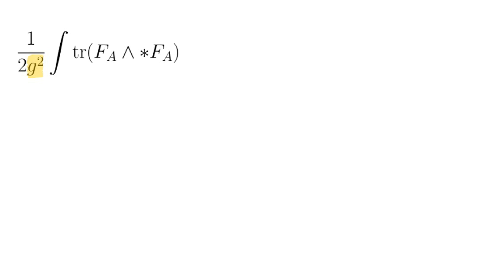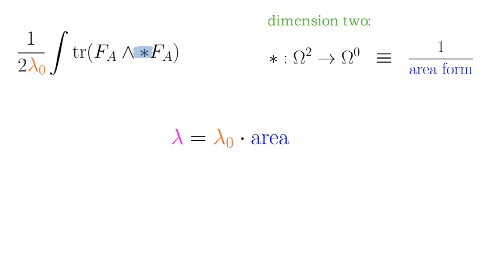Physicists will denote such a constant by e squared or g squared, but I'll just call it λ₀. In two-dimensional Yang-Mills, the action involves the Hodge star, mapping two forms to zero forms. This involves division by an area form. Hence, 2D Yang-Mills requires as input an area form, and as a consequence, the meaningful dimensionless coupling constant to consider is λ, which is given by λ₀ times some reference area element.